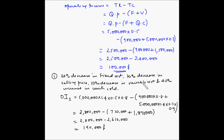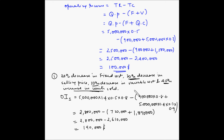The 40% increase in units sold is the big factor contributing to increasing operating income. The decrease in fixed cost also contributes to increasing it. The decrease in selling price works against operating income, but this decrease is not as large as the positive factors. The decrease in variable cost also helps increase operating income. It is very difficult to predict the net effect just by looking at these numbers, but you can sometimes get a feel for whether the overall impact will be positive or negative by reading the changes.